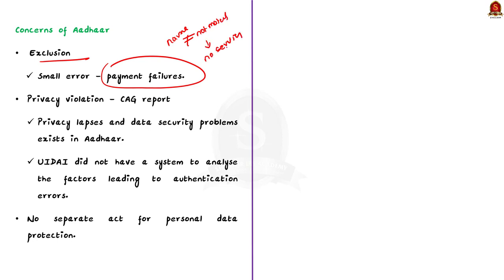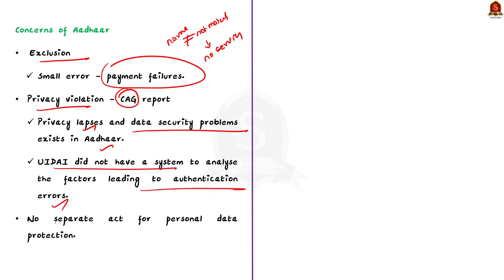The second issue is the issue of privacy. An audit by the Comptroller and Auditor General of India found that privacy lapses and data security problems exist in Aadhaar. There are many cases of Aadhaar data breaches and unauthorized access to Aadhaar data. A report by the CAG from 2022 states that UIDAI did not have a system to analyze the factors leading to authentication errors. As the country is still working on the personal data protection bill, this is a major privacy concern.